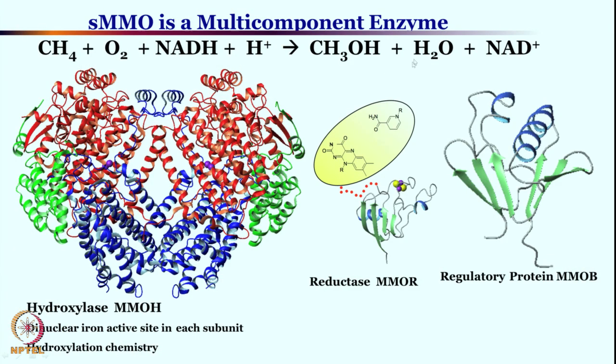We are going to see how methane is converted into methanol. Methane requires oxygen and NADH/H⁺ to form methanol. This is a multicomponent enzyme whose components are: hydroxylase (MMOH), reductase (MMOR), and regulatory protein (MMOB).